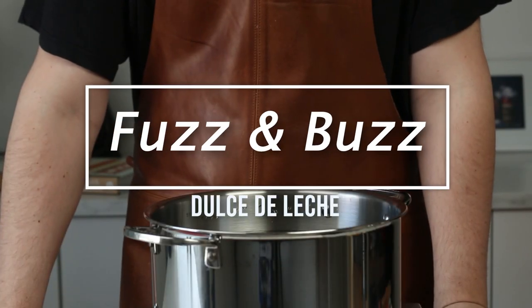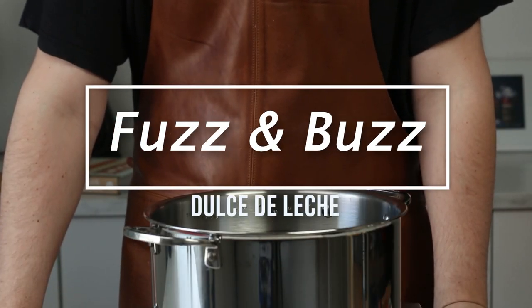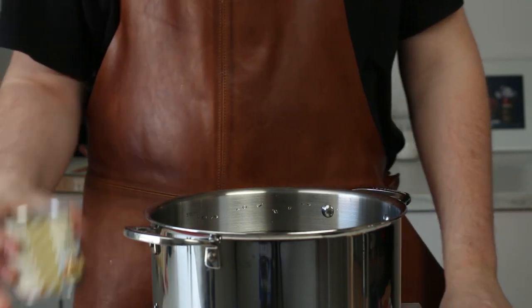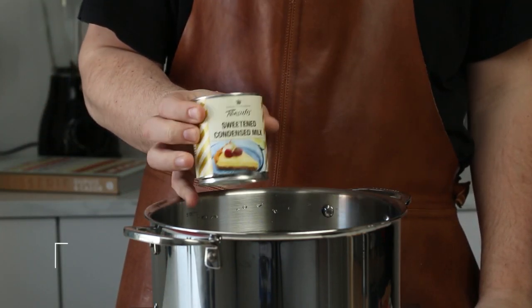Hello everyone and welcome to Fuzz and Buzz. In today's short we're gonna make Dulce de Leche. You need one can of sweetened condensed milk.